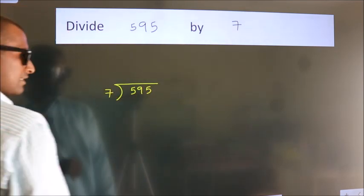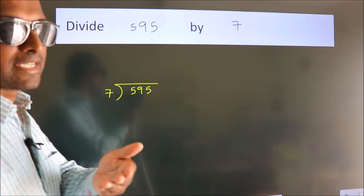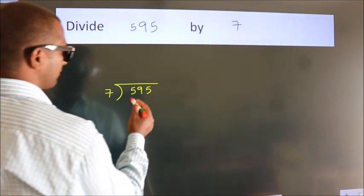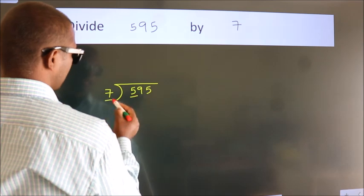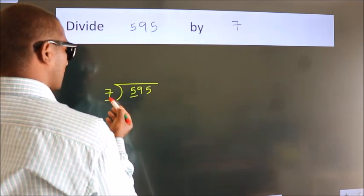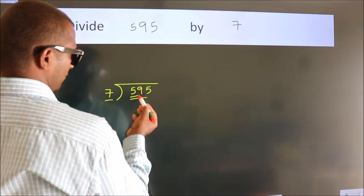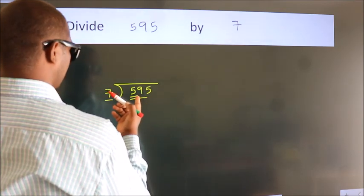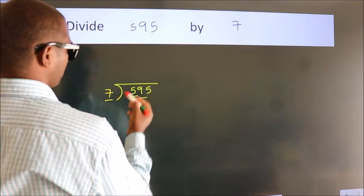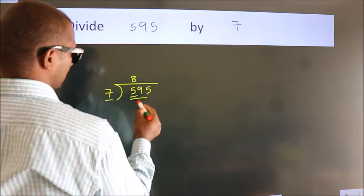This is step 1. Next, here we have 5, here 7. 5 is smaller than 7, so we should take two numbers: 59. A number close to 59 in the 7 table is 7 times 8, which is 56.